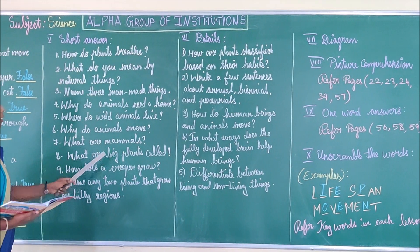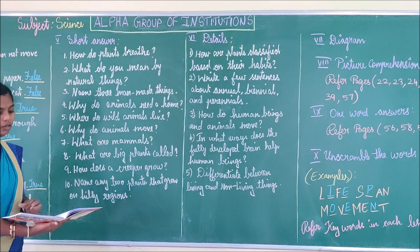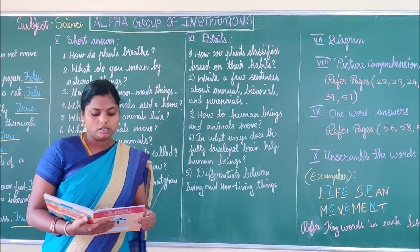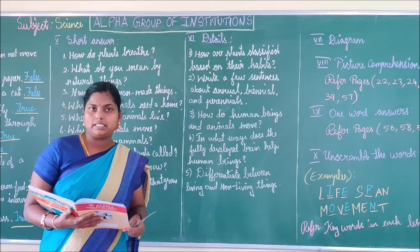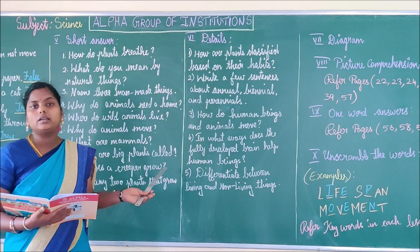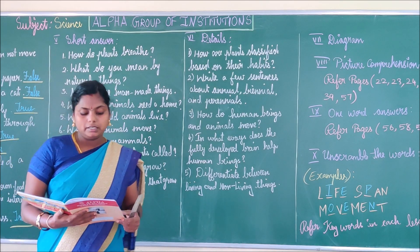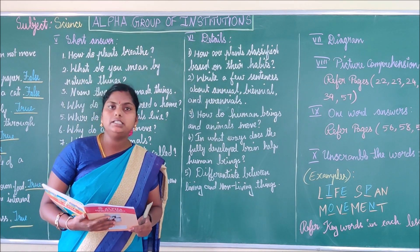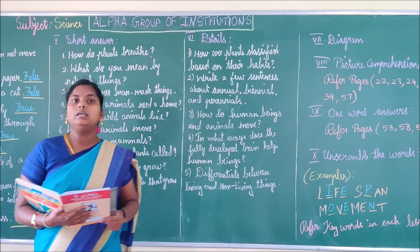Eighth question: What are big plants called? Big plants are called trees. Examples of trees are neem tree and mango tree.